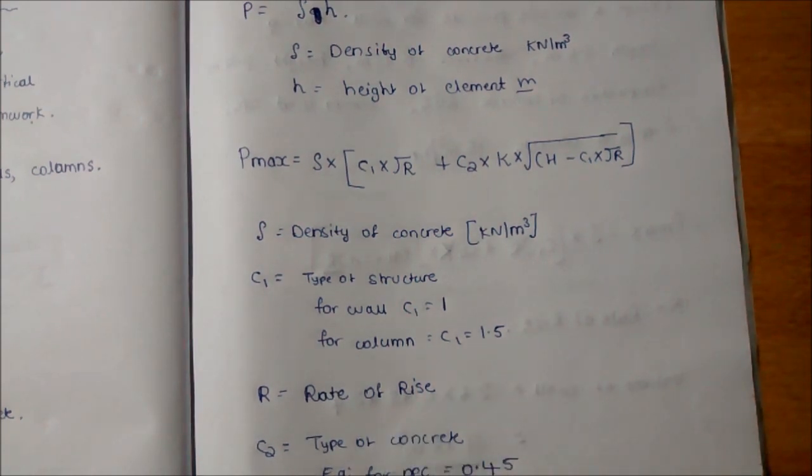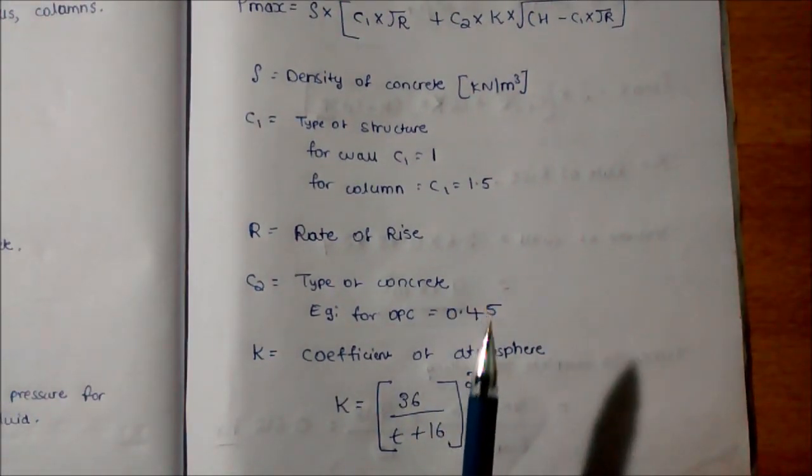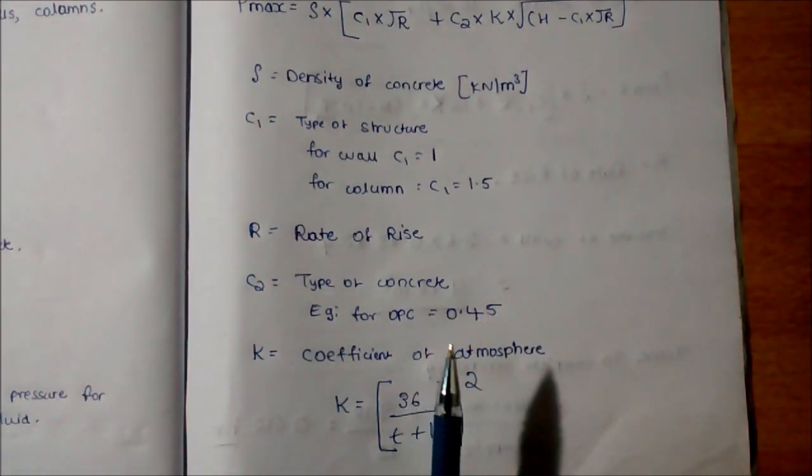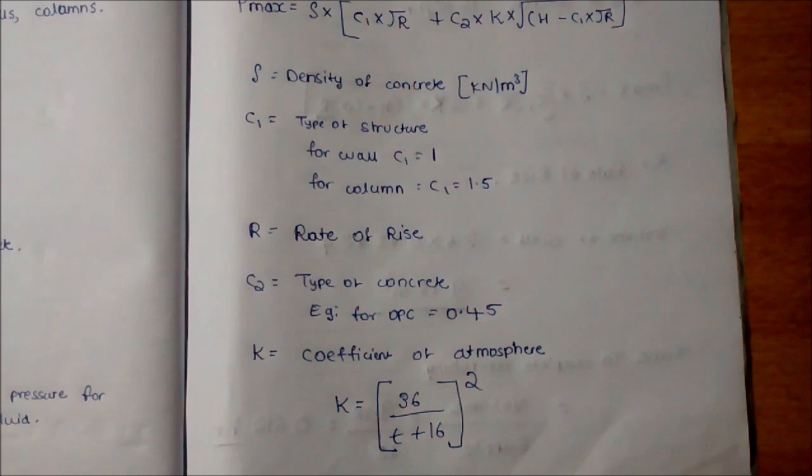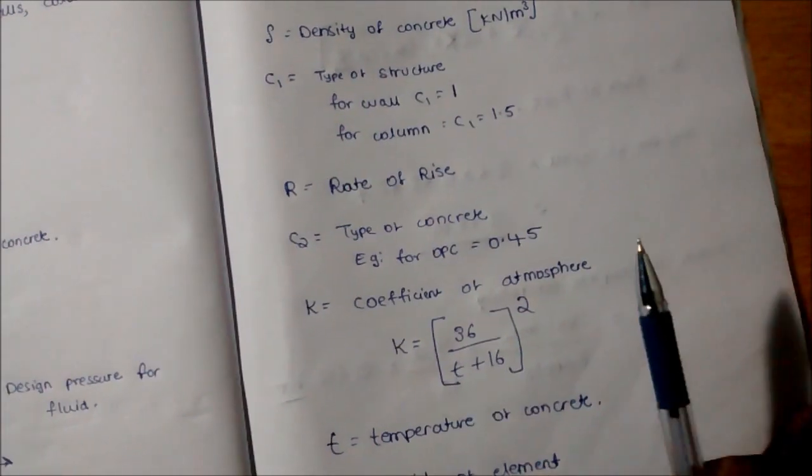I will discuss how to calculate the rate of rise also. C2 is the type of concrete. For example, for OPC it is 0.45. If other type of concrete is used, the C2 value is given by the engineer or architect. To determine the K value, we have the formula: 36 divided by T plus 16, whole squared. T is the temperature of concrete, and H is height of element.